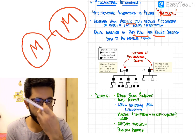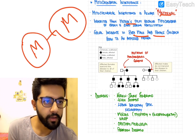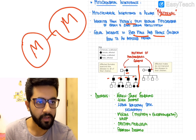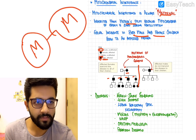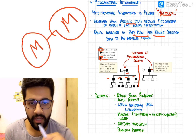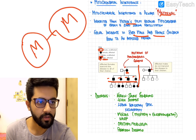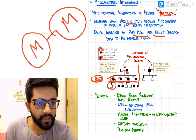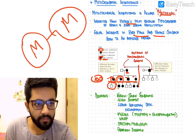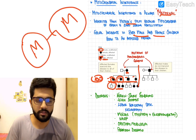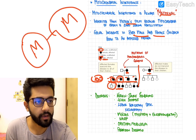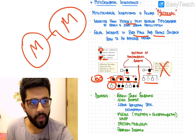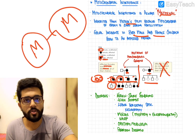Looking at the pedigree chart — the most important and most tested part of mitochondrial inheritance — an affected mother gives rise to all affected children, both male and female. This is 100% transmission to the next generation. Affected female children also transmit to all of their children. However, affected male children give rise to normal children, meaning affected males do not transmit the disease.